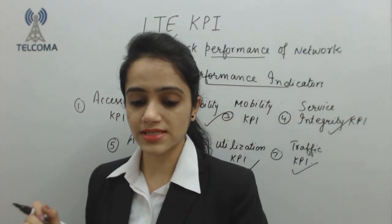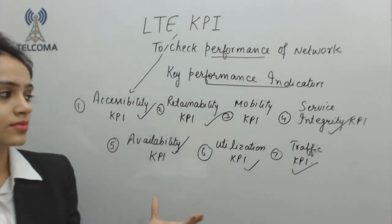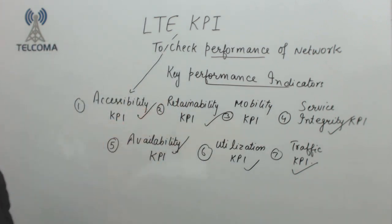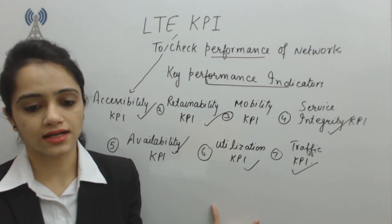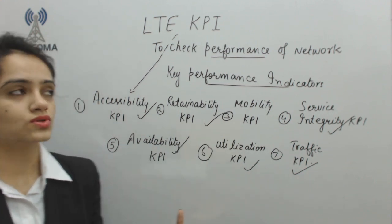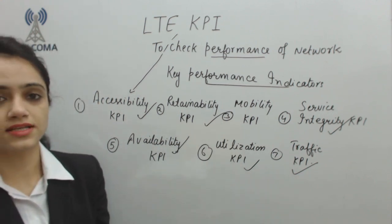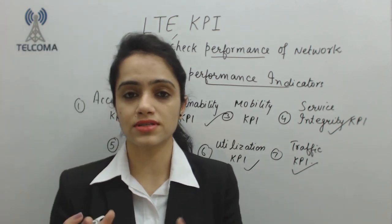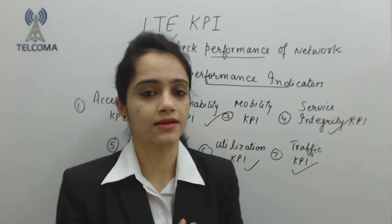Utilization KPI covers how much resources we are utilizing, and Traffic KPI covers the total number of users. These are the seven major categories of key performance indicators. We will discuss more KPIs under each category in our classes. Today we start with the very first category: Accessibility KPI.